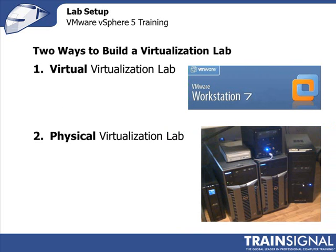There are really two ways to build a virtualization lab. The first way would be to create a virtual virtualization lab using either VMware Workstation or VMware Fusion. With these options, you're running ESXi as a virtual machine on your existing Windows or Mac OS desktop or laptop system. The second way would be to build a physical virtualization lab — in other words, use real hardware and real servers to install ESXi on. And of course, there are pros and cons to each of these different options.